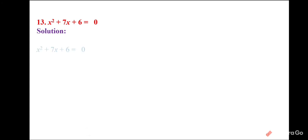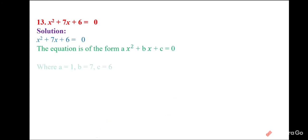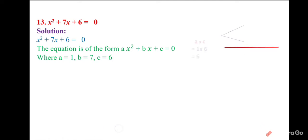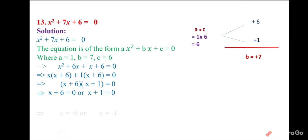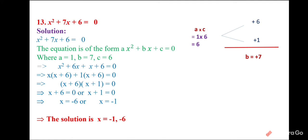Practice problem: x² + 7x + 6 = 0. Here a × c = 6 and b = 7. The pair 6 and 1 works: 6 × 1 = 6 and 6 + 1 = 7. Splitting 7x as 6x + x and grouping: x(x + 6) + 1(x + 6) = 0, giving (x + 6)(x + 1) = 0. Solutions: x = −6 and x = −1.